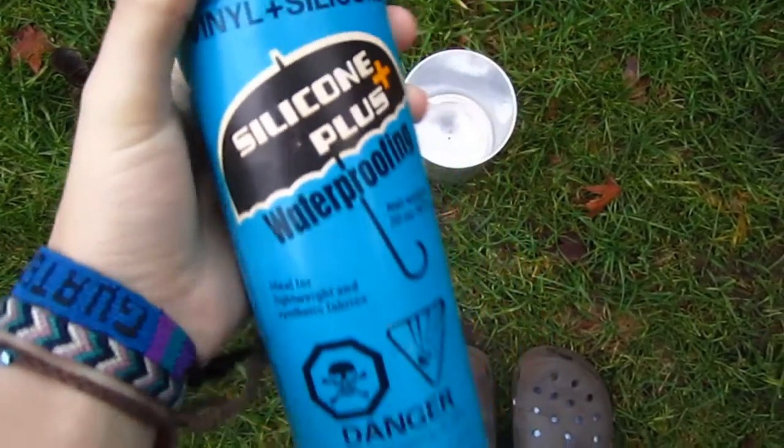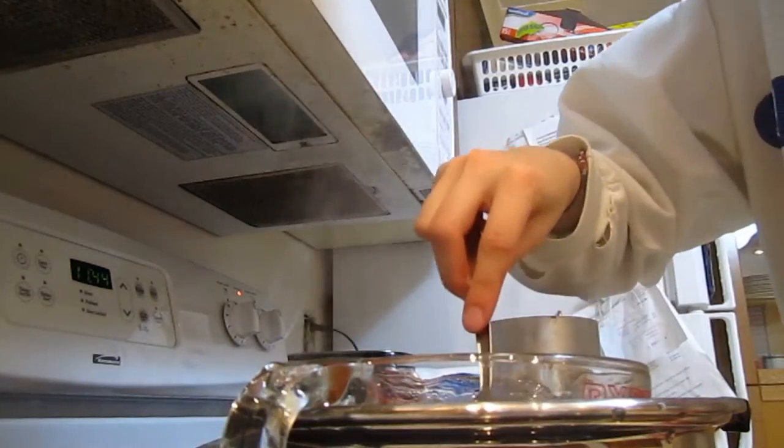Items I already had were sealing spray, a medium pot, a glass measuring cup, and utensils I didn't mind getting wax on.